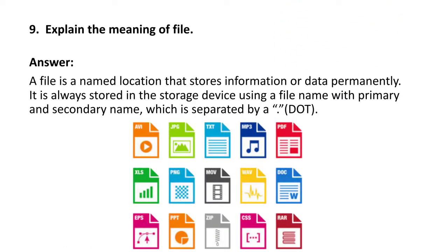Next question: explain the meaning of a file. A file is a named location that stores information or data permanently. It is always stored in a storage device using a file name with a primary and secondary name separated by a dot. Examples of different file types include: AVI (video), JPG (image), TXT (notepad), MP3 (audio), PDF, XLS (Microsoft Excel), DOC, PPT, ZIP, and RAR.